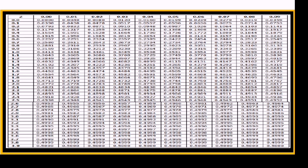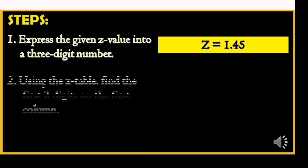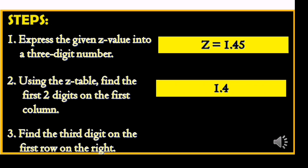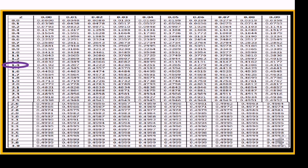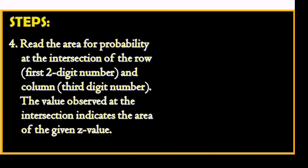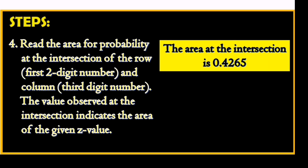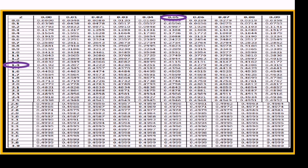So we have here the first column value 1.4. We will read the area for probability at the intersection of the row 1.4 and column 0.05. The area at the intersection is 0.4265. Here is the intersection of 1.4 and 0.05.